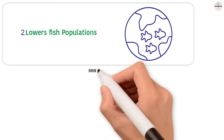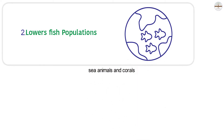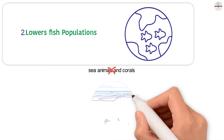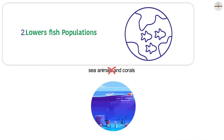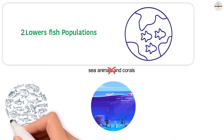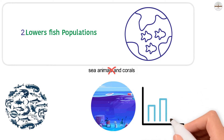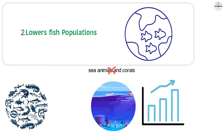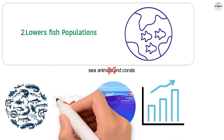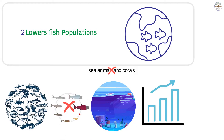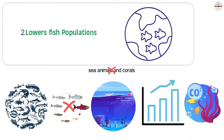Ocean acidification also lowers fish populations. Shelled sea animals and corals are not the only living things harmed by dangerous acid levels — ocean acidification harms all fish in the oceans. When fish ingest carbonic acid, it makes them sick, causes growth problems, or even death in very bad cases. Then the fish will not be able to reproduce, leading to fewer fish in the water. Acidic conditions also harm the eggs of some fish species, causing eggs to die before they hatch.